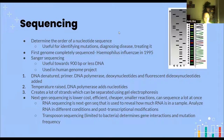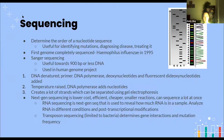A general term for modern DNA sequencing is next generation sequencing — a broad term for all sequencing that is lower cost, more efficient, cheaper, uses smaller reactions, and can sequence a lot more base pairs at once. One example is RNA sequencing, which reveals how much RNA is in a sample, analyzes RNA in different conditions, and looks at post-transcriptional modifications.